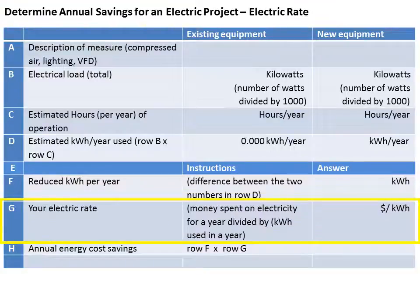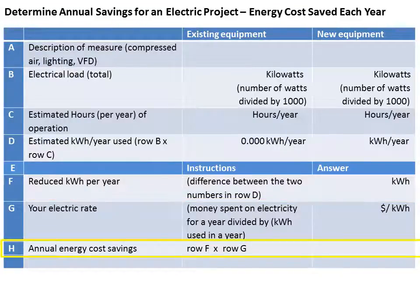Next, determine your electric rate by dividing the number of dollars spent on electricity for a year by the number of kilowatt hours used in a year. You will look at your electric bills to determine this information. We'll refer to an electric utility bill during our lighting project example. Now multiply your reduced kilowatt hours per year in row F by your electric rate in row G. This gives you your annual energy cost savings.